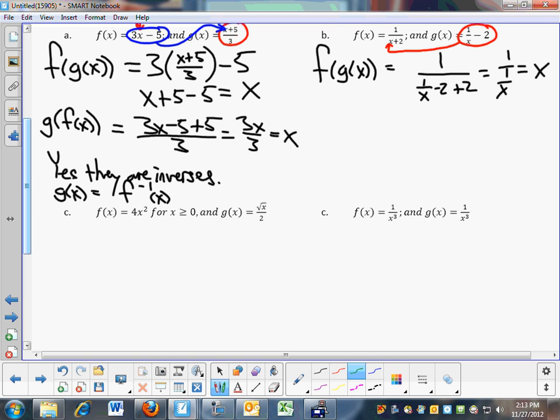So we decide to switch. Let's take this and get it in there. That will be g of f of x. Take f of x and plug it in for g. 1 over 1 over x plus 2 minus 2. How do you simplify 1 over 1 over x plus 2? Multiply by the reciprocal, and you get x plus 2 minus 2 is x.